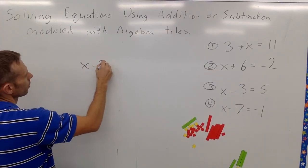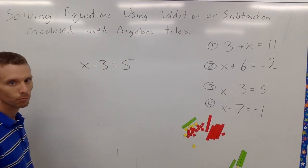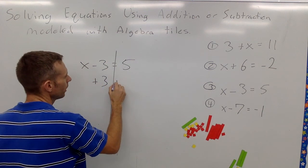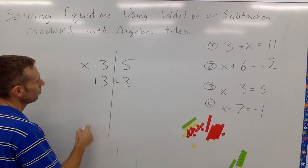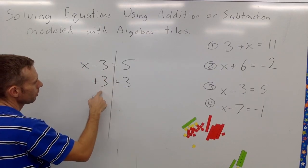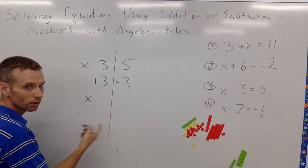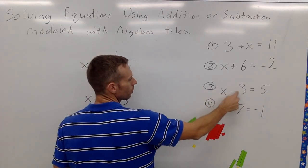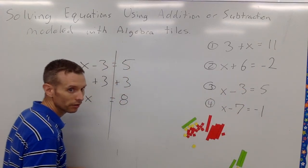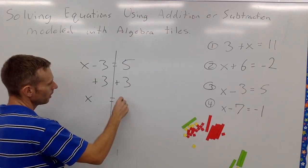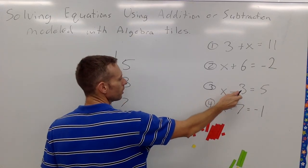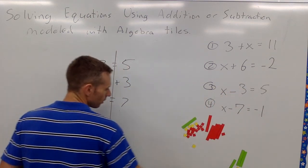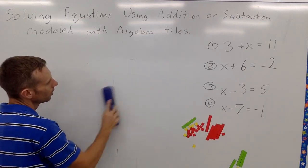Now without the tile modeling: X minus 3 equals 5. I want to do the same thing — add 3 to both sides. X minus 3 plus 3 is zero, so X equals 5 plus 3, which is 8. Let's check: 8 minus 3 is 5 — five equals five ✓. If we had accidentally gotten 7, we'd check 7 minus 3 equals 4, and 4 does not equal 5, so we'd know something was incorrect. X equals 8.